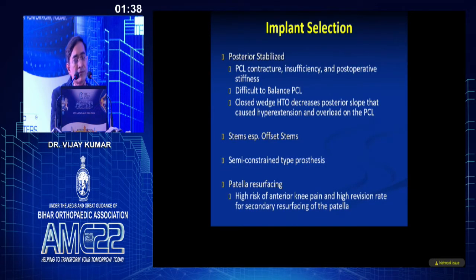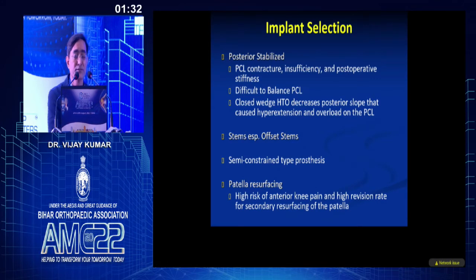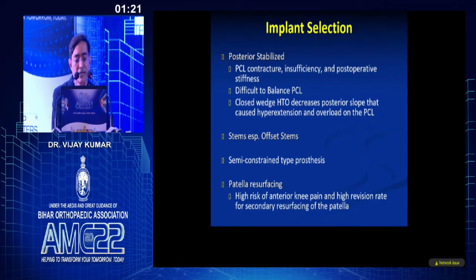The choice of implant in these patients is a posterior stabilized implant because the PCL is often abnormal — it may be contracted or insufficient, and it is very difficult to balance the PCL in these patients. An offset stem should always be available. You should also have a semi-constrained type of prosthesis as a backup, and patellar resurfacing is recommended because of the high incidence of anterior knee pain in these patients.